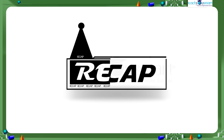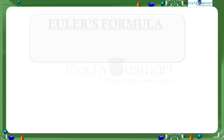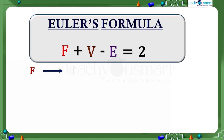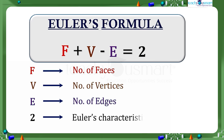Let's have a quick recap. Today we discussed Euler's formula for convex polyhedrons, that is F plus V minus E equals 2, where F is the number of faces, V is the number of vertices, and E is the number of edges. 2 is the Euler's characteristic for a convex polyhedron.